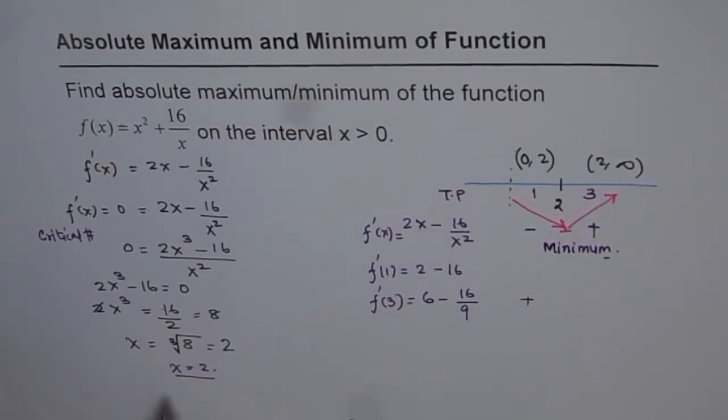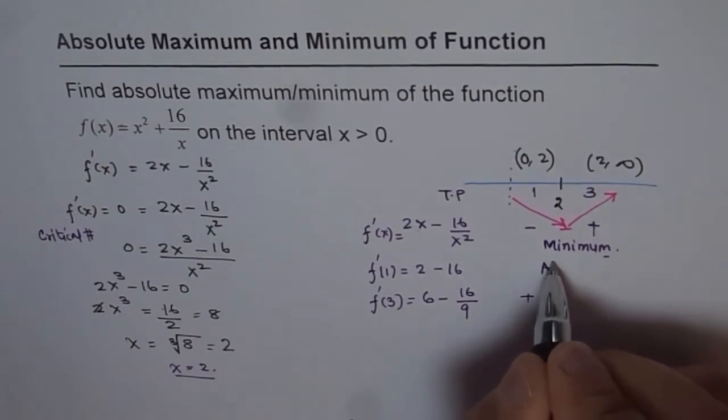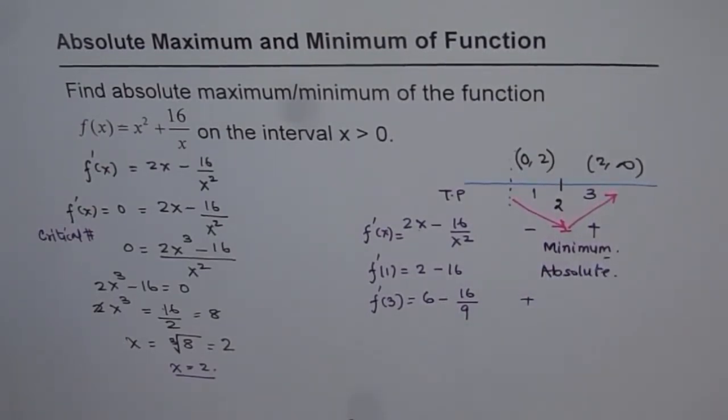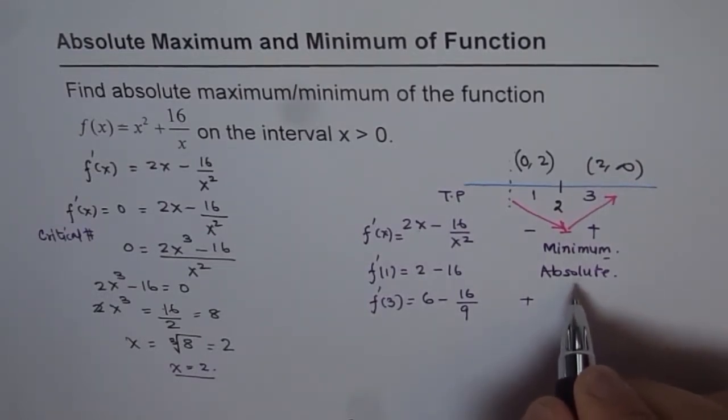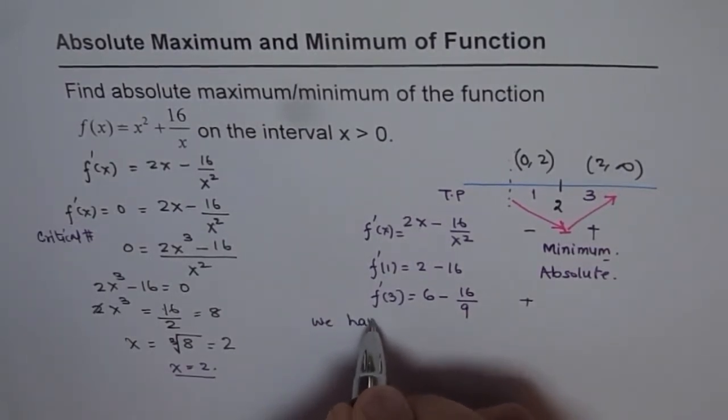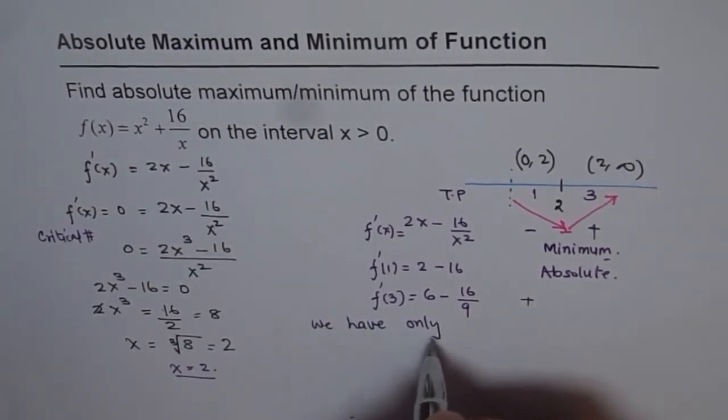Now you can see, since there is only one critical point in this function, this minimum is absolute minimum. It's very important to show why it is absolute minimum in such cases. The reason here is that we have only one critical point.